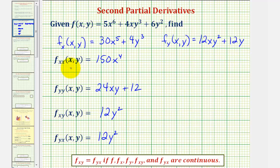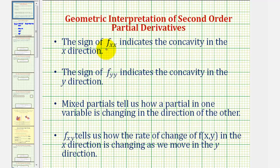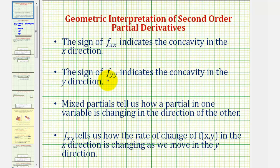Let's talk about the meaning of these second order partial derivatives. The sign of the second order partial derivative with respect to x indicates the concavity of f of x comma y in the x direction. If it's positive, it's concave up in the x direction; if it's negative, it's concave down in the x direction. And the sign of the second partial with respect to y indicates the concavity in the y direction — if positive, f is concave up in the y direction, and if negative, it's concave down in the y direction.